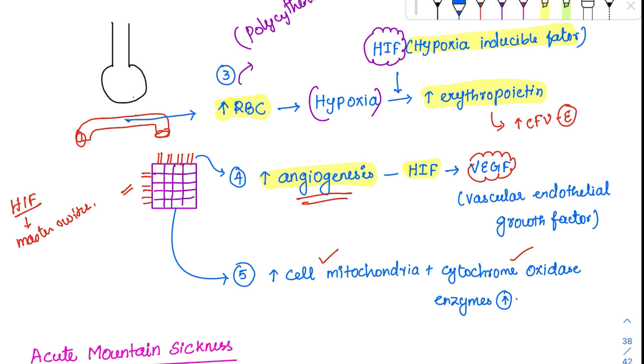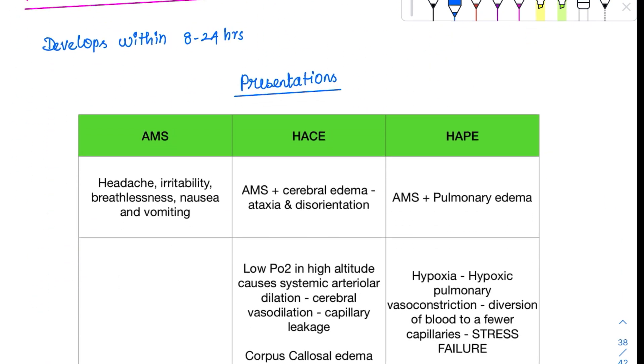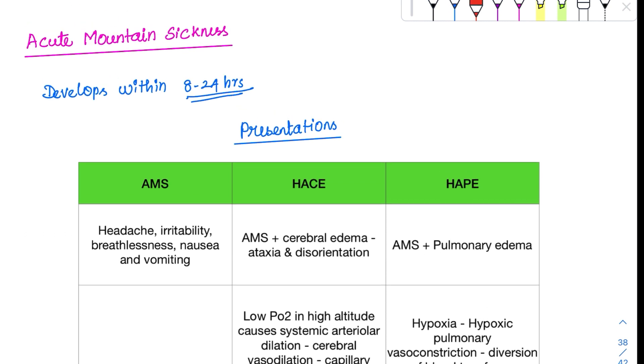If the person can't adapt to high altitude, they'll develop acute mountain sickness. This is very common with people who do rapid ascent. For example, suddenly going to Leh Ladakh in one day. There should be slow ascent - stay somewhere, get acclimatized, then climb higher. Don't rapidly ascend. This develops within 8 to 24 hours.